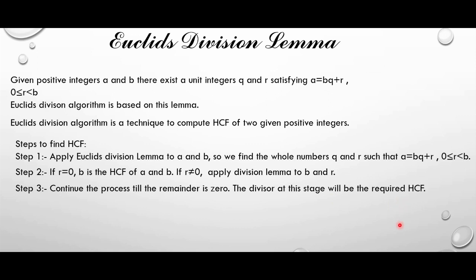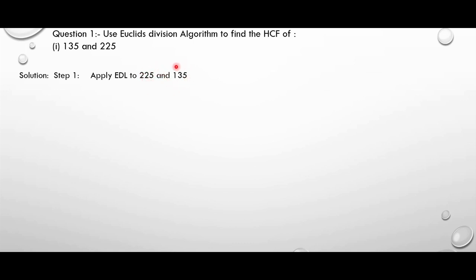Now let us move to exercise 1.1 where they have asked us to find the HCF of given two numbers using Euclid's division algorithm. The first question gives us 135 and 225. We will solve it step by step. In step 1, we need to apply Euclid's division lemma to 225 and 135. The greater number is considered as a and the smaller number as b, so a equals 225 and b equals 135. Now let us apply the formula a equal to bq plus r.